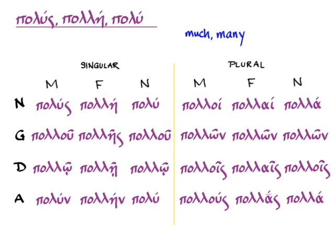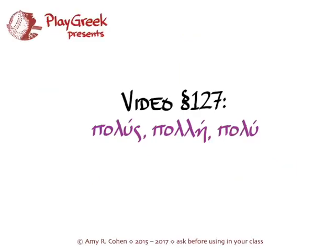Now the only things that are unusual from the good old kalos, kale, kalon declension are the masculine and neuter nominative singular and the masculine and neuter accusative singular. Otherwise, as you can see, it functions exactly the same way as kalos, kale, kalon. I don't think it's going to cause you any problems learning its declension or practicing using it in your various drills, sentences, and translating.